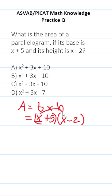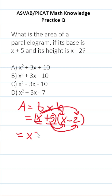We're going to take x and multiply it here and here, then take 5 and multiply it here and here. x times x is x squared. x times negative 2 is negative 2x. 5 times x is plus 5x. 5 times negative 2 is negative 10.